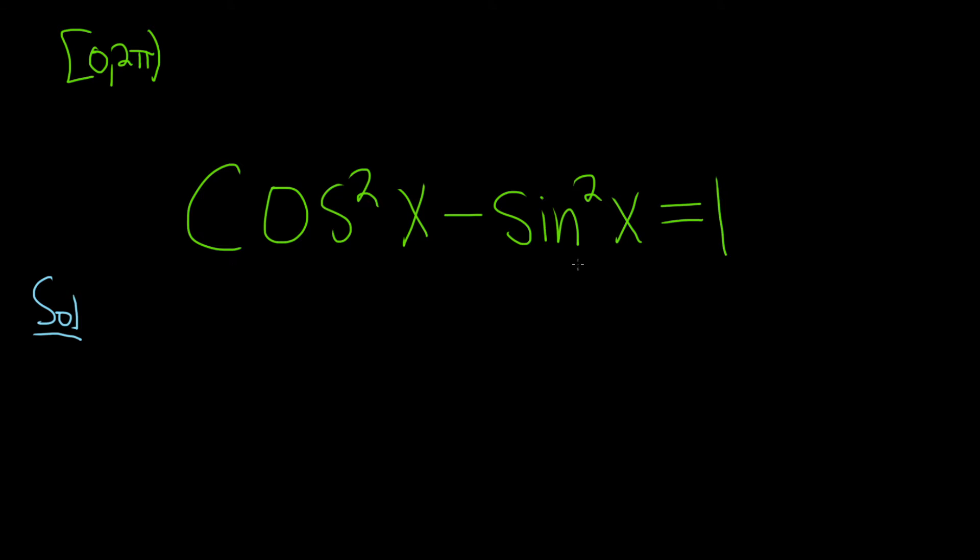So cosine squared minus sine squared is the same thing as cosine of 2x. And this is equal to 1. Okay, so now we're carefully going to solve this.